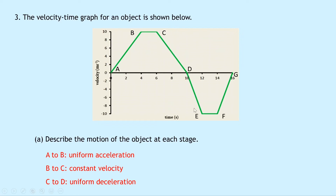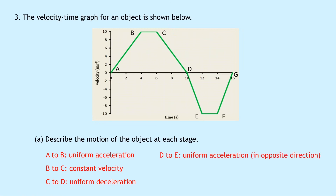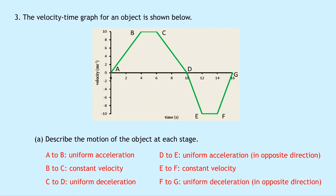Next we have D to E. Notice that we've gone below the x-axis, which means our object must have changed direction. Going from D to E, we're starting at 0 metres per second down to minus 10 metres per second — the minus just means it's going in the opposite direction — so we have a uniform acceleration in the opposite direction. From E to F we have a constant velocity in that same direction. From F to G we have a uniform deceleration ending at 0 metres per second, still in the opposite direction.